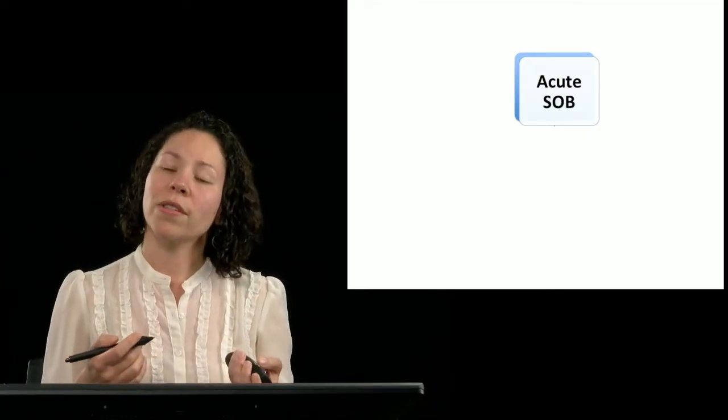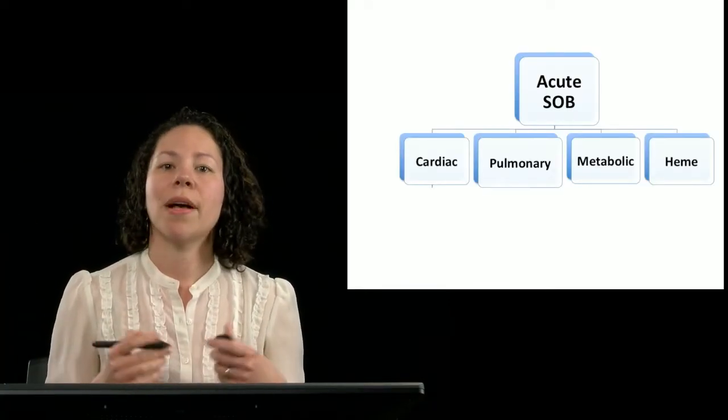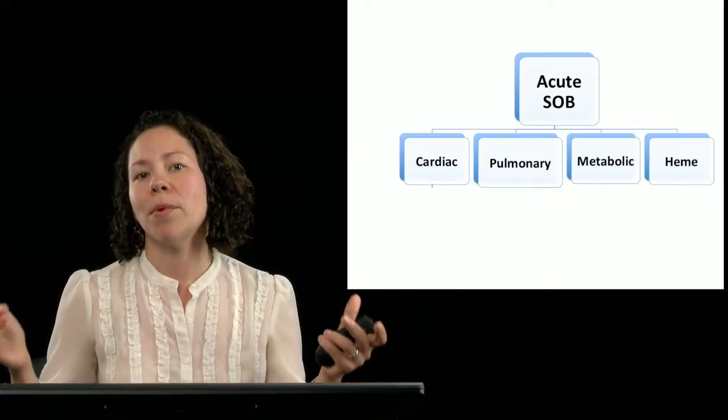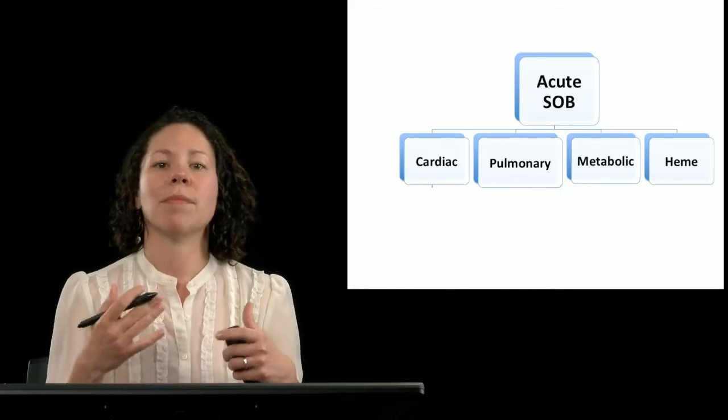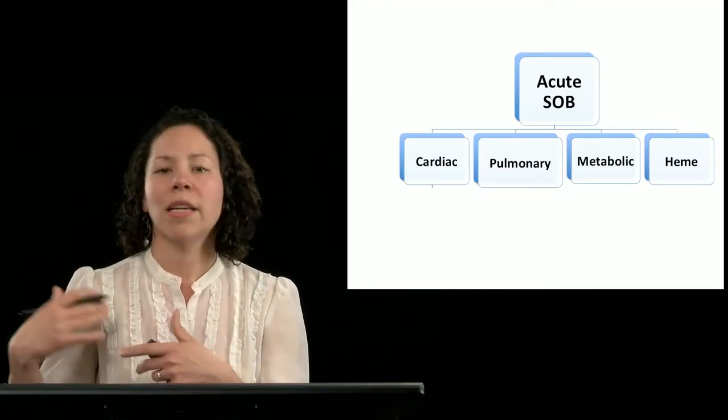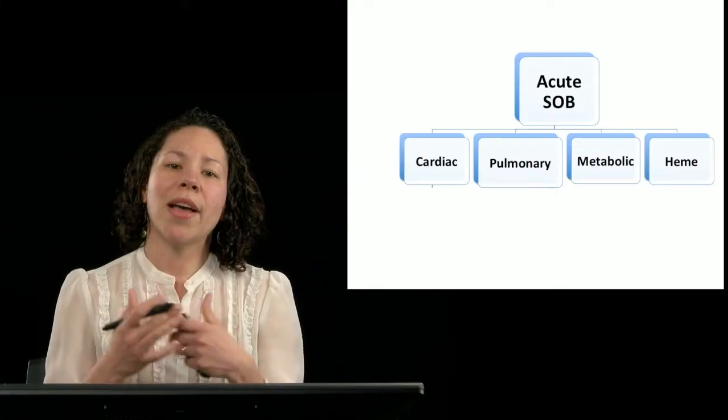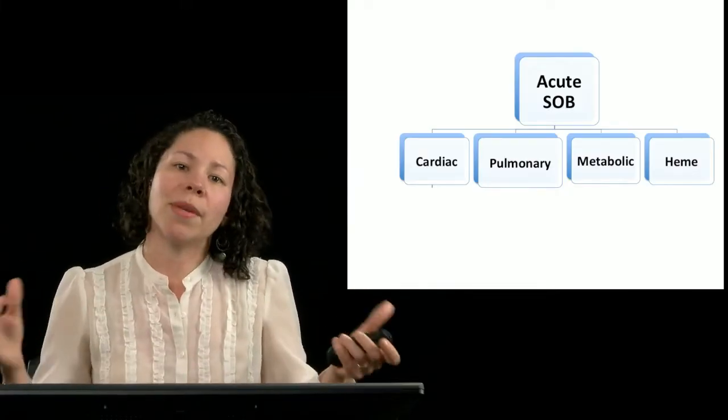So for example, for acute shortness of breath, maybe I think about these four big buckets as being the most common causes in my patient population for shortness of breath. So is it cardiac? Is it pulmonary? Is it metabolic? Is it heme? And that would be actually a fine starting point. Maybe I stop there.